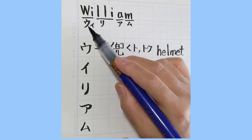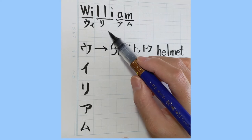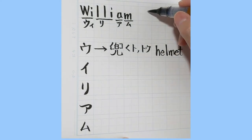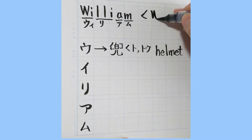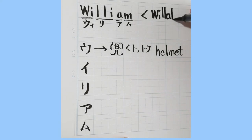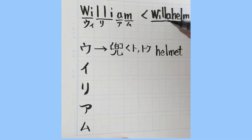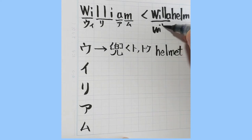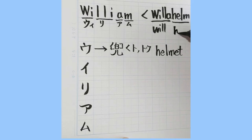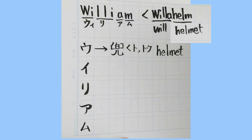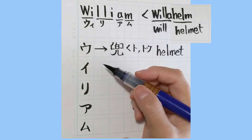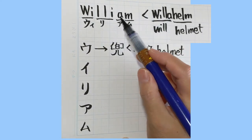Actually, as you can see these original letters here — originally, the name comes from Willhem. May I write it here? Willhem is the word. This part, ウ, means 'will,' and the latter part means 'helmet.'